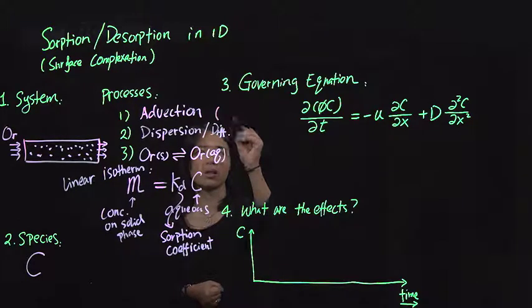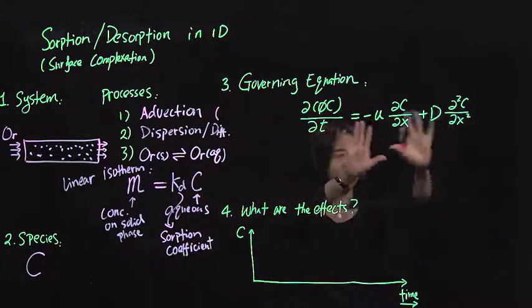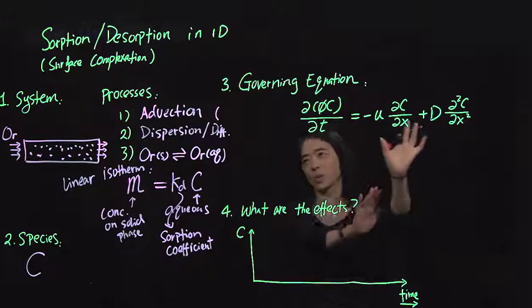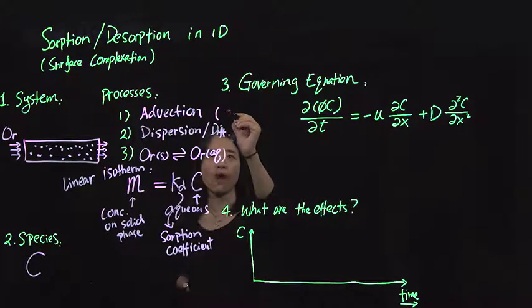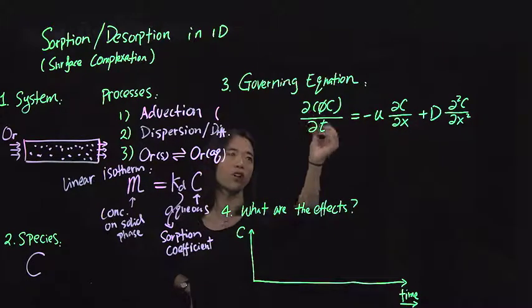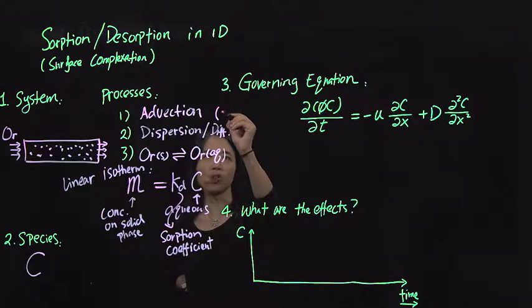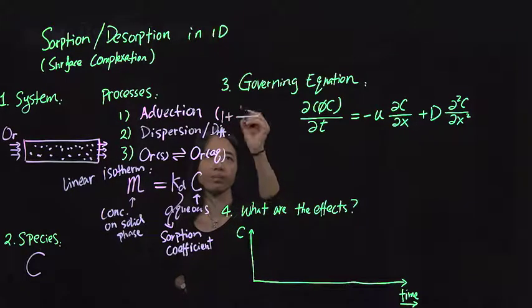Which would be, actually, everything else will be the same, all these terms that we talked about before. But there will be one more extra term in front of this, which is 1 plus (1 minus φ) over φ.